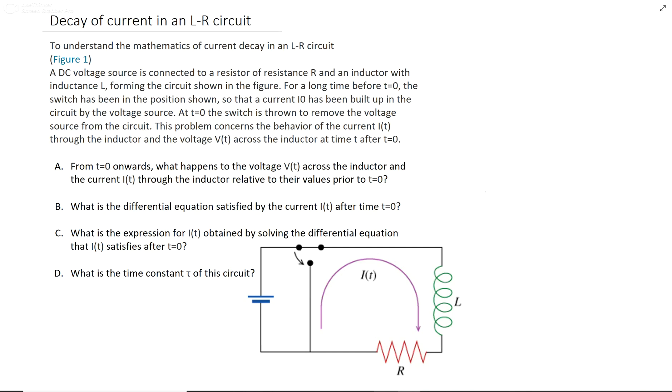All right, this is decay of current in an LR circuit. So they give you this nice picture over here, and they say that the switch is initially connected so the voltage is running through it, and that at t equals 0 they go ahead and stop that switch so all the voltage in it stops at t equals 0.